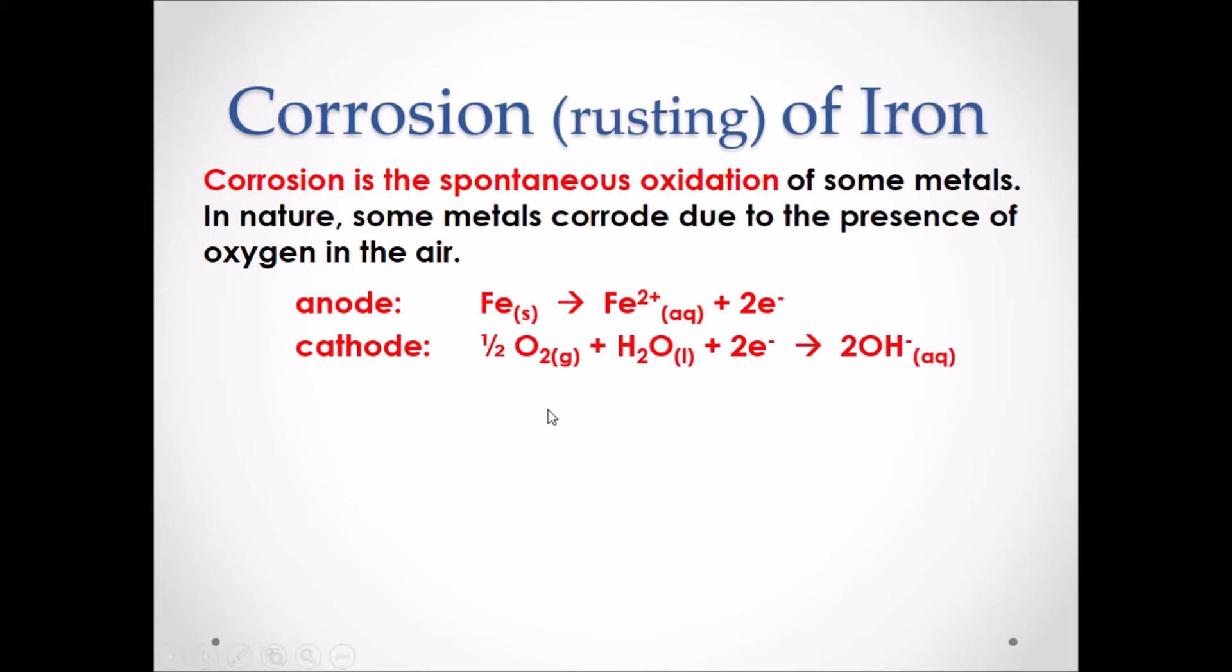In our reduction half reaction, we have oxygen from the air plus water gains electrons forming OH-. In the process of corrosion, the reduction half reaction never changes. It will always be one half O2 plus H2O gains two electrons to form two OH- ions.